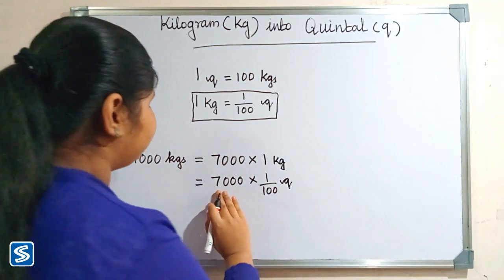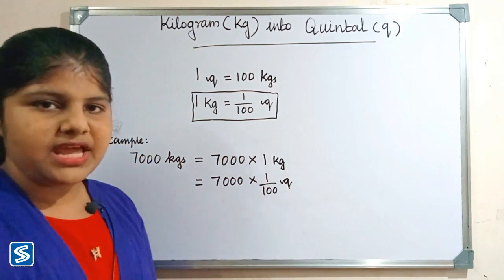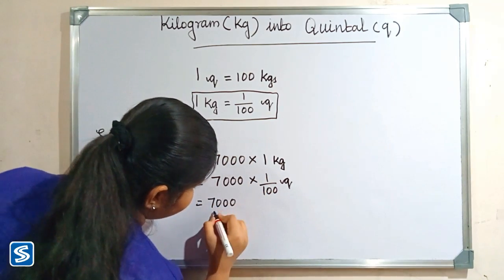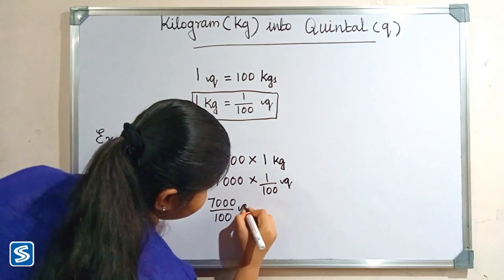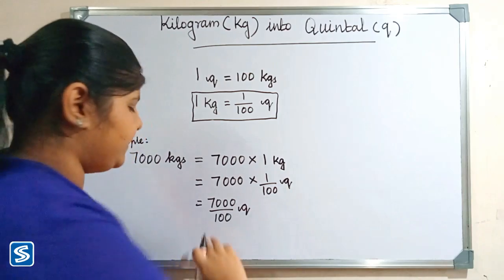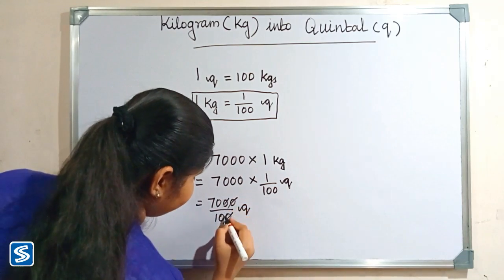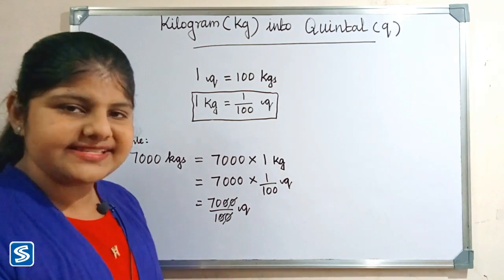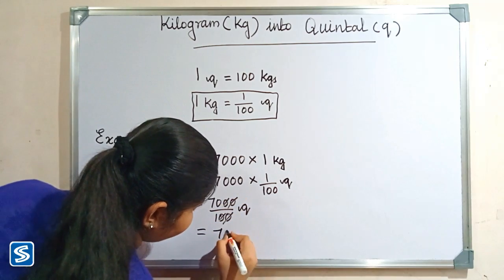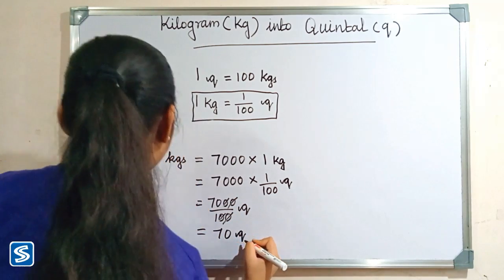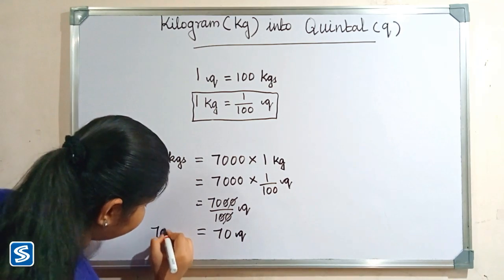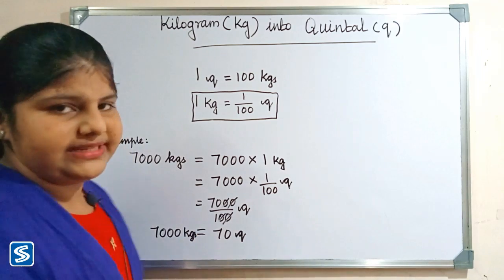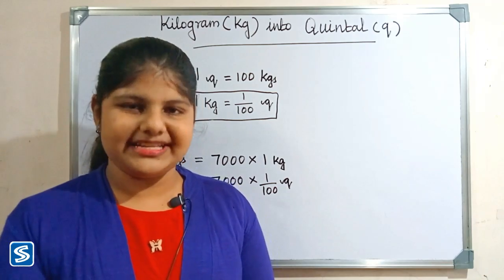Now we multiply 7000 by 1, which gives 7000, so we have 7000 by 100 quintals. Here the two zeros cancel out. When we divide 7000 by 100, our answer will be 70 quintals. So 7000 kilograms is equal to 70 quintals.